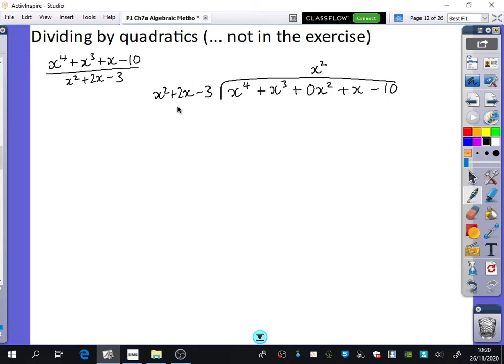Then you're going to multiply this by, all of it, by x squared. So you get x to the 4 plus 2x cubed minus 3x squared. It's the same thing. You just subtract them. x to the 4 minus x4 goes. And then you're going to have x cubed minus 2x cubed, which is minus x cubed, and plus 3x squared. Then remember, you bring down the x.